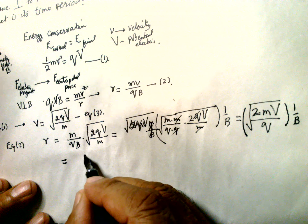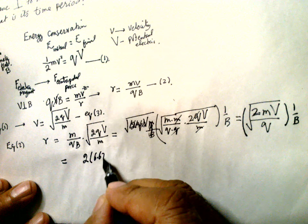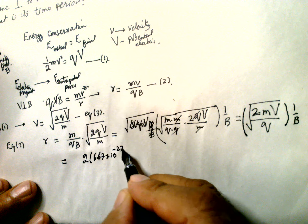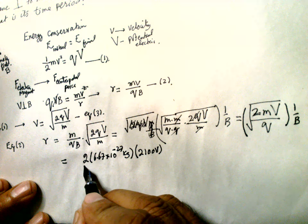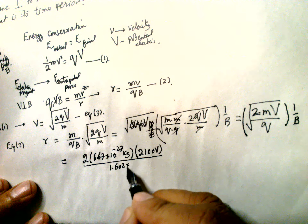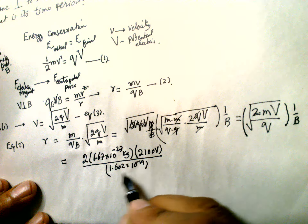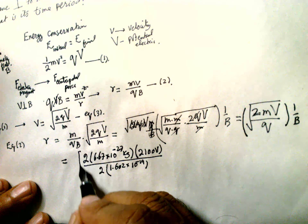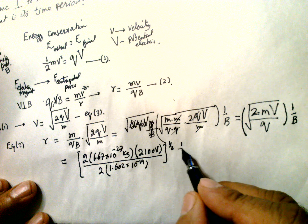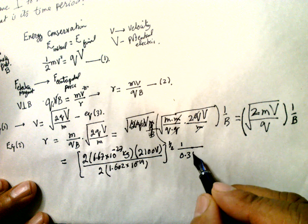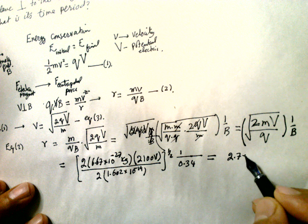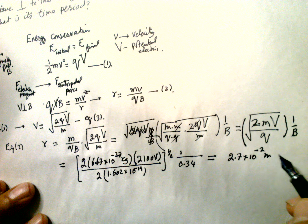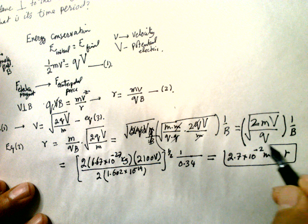Substituting values: mass = 6.67×10⁻²⁷ kg, voltage = 2100 volts, charge = 2 × 1.602×10⁻¹⁹ coulombs (doubly charged), magnetic field = 0.34 tesla. This gives r = 2.7×10⁻² meters. This is the first answer — the radius of curvature.